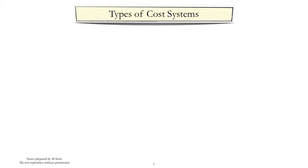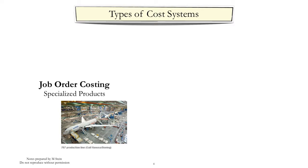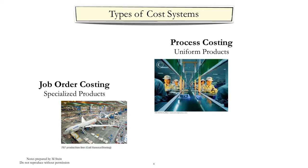Cost systems provide a structure for the collection of cost data. Commonly used systems are job order costing and process costing. Job order costing is used when it makes sense to cost individual items — for example, the production of an airliner such as the 787. Process costing is used when products are made in continuous batches, such as computer chips.